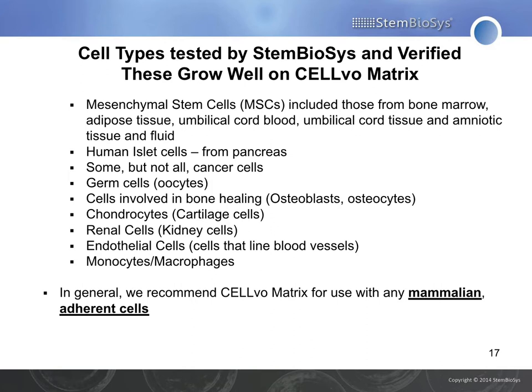Even though our products are made by human cells, they can be used with different species as well. We've had people use these with mouse, rat, marmoset, baboon, horse, and bovine cells — and even avian cells have been cultured on these matrices. Though most of the data I showed is from bone marrow MSCs from humans, this matrix recreates common motifs found in various cell niches that can result in more native phenotypes from many different cell types and from many different species.